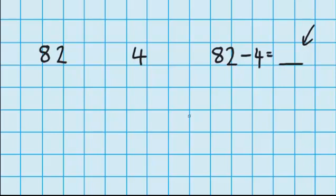So just like we've done in the other examples, I'm going to count backwards from 82. And I need to go back four numbers. So I'll have 81, 80, 79, and 78.